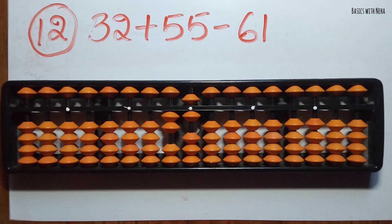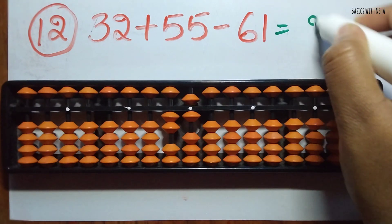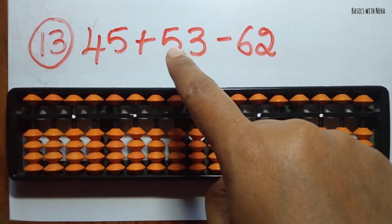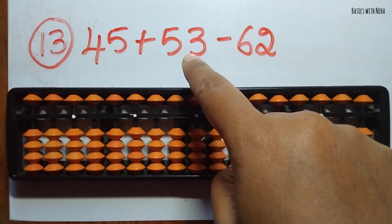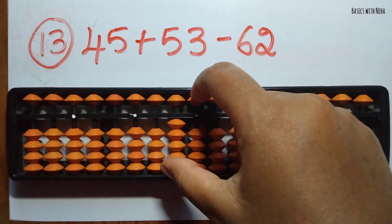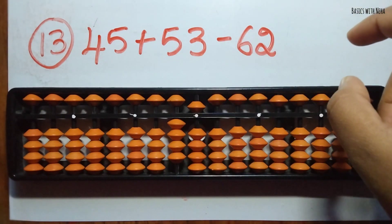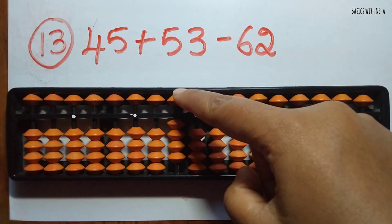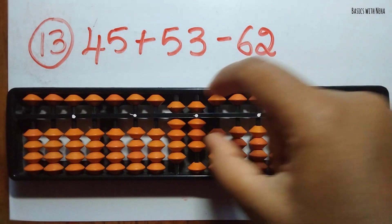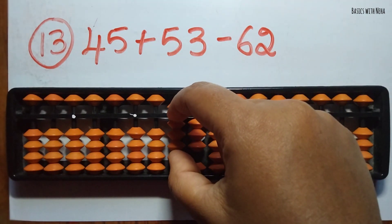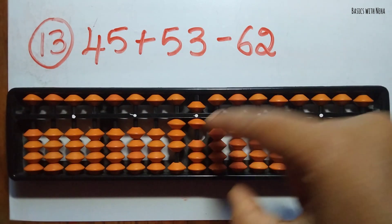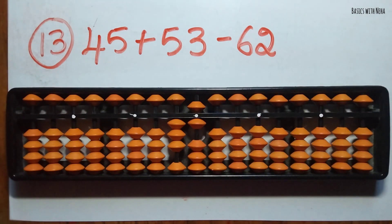The thirteenth sum: 45 plus 53 minus 62. First take 45, now we should add 53 — add 5 in the 10's rod and 3 in the 1's rod. Minus 62 — minus 6 can be done directly in the 10's rod and minus 2 can be done in the 1's rod.